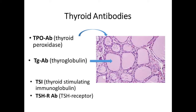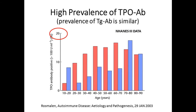The important thing to remember is there's a very high background prevalence, particularly of TPO and thyroglobulin antibodies — resist the urge to routinely check these because you'll find them in up to 25% of some populations. This is NHANES data showing that as you get older, up to 20% of folks can have high TPO antibodies if you check.